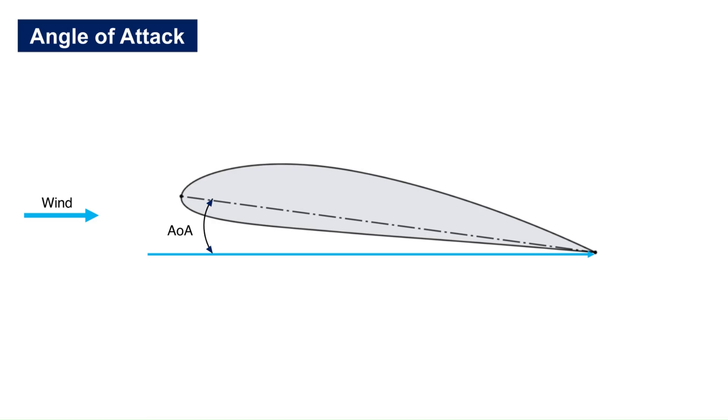The airfoil angle of attack is the angle between the chord line and the freestream air. The angle of attack is considered positive if it is at a nose-up angle with respect to the freestream air.